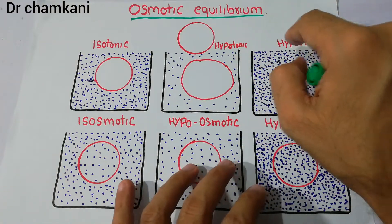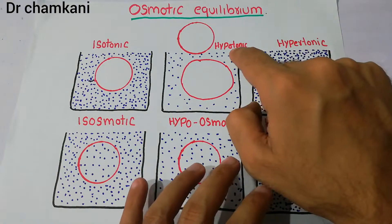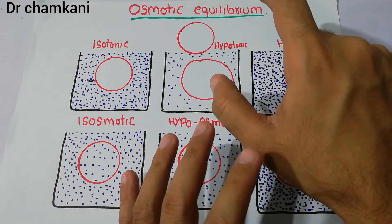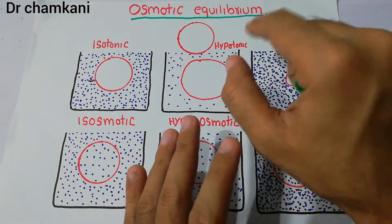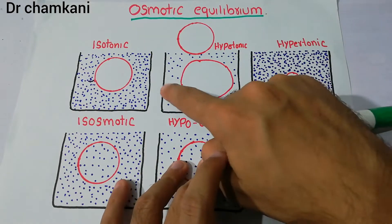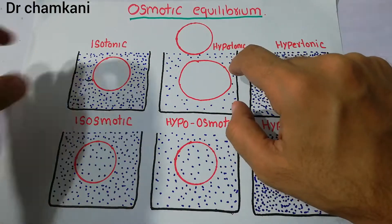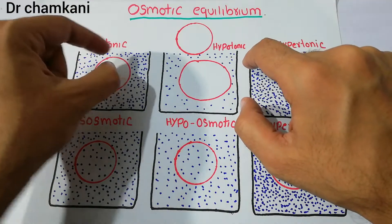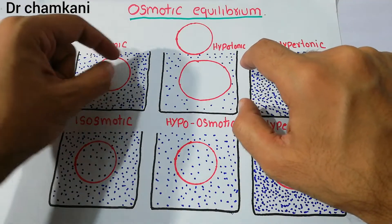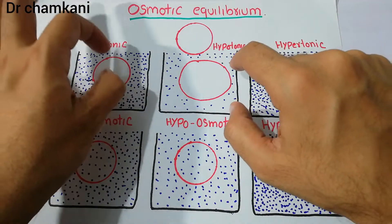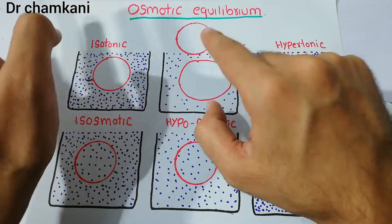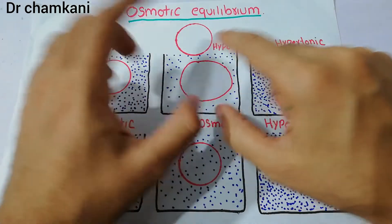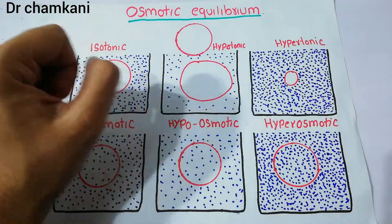In osmosis, water moves from a region with high concentration of water to a region with low concentration of water. So if a cell is placed in isotonic fluid, the size and shape will remain the same. If a cell is placed in a hypotonic fluid, it will swell.